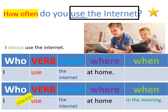Đây là ví dụ mà thầy Jeremy đã làm để cho các con biết cách làm những slide có ngôi sao. How often do you use the internet? Thầy Jeremy trả lời: I always use the internet. Phân tích câu: I là who, use là verb, the internet là what. Chúng ta đặt 'always' ở phía trước 'use' vì 'use' là động từ chính. Vậy câu hoàn chỉnh là: I always use the internet at home in the morning — các con có thể thêm where và when.